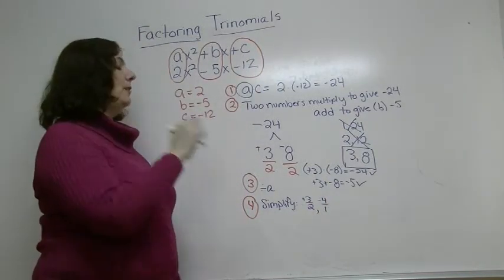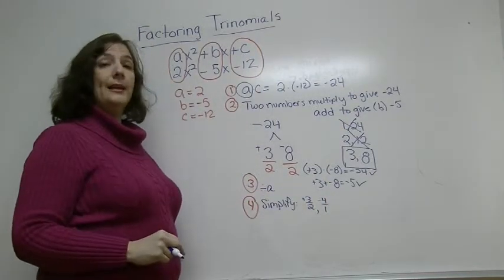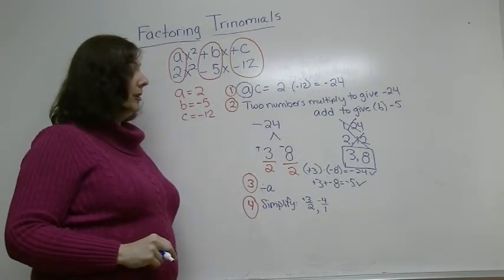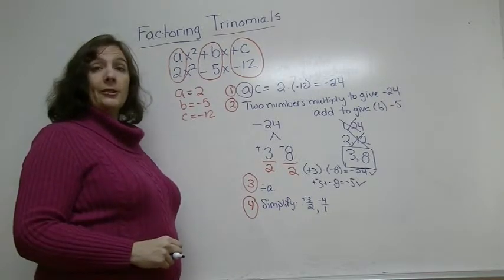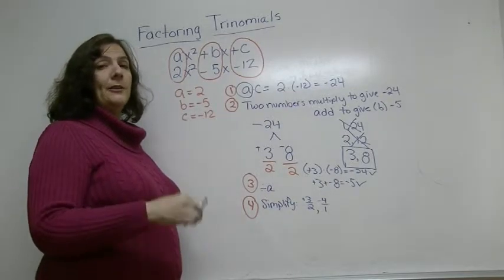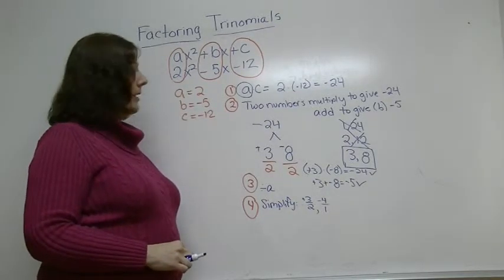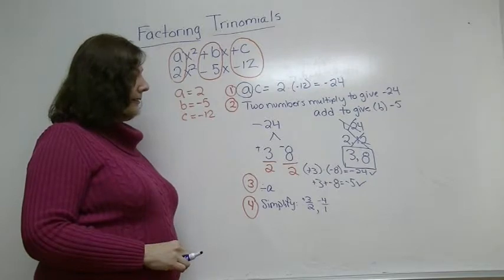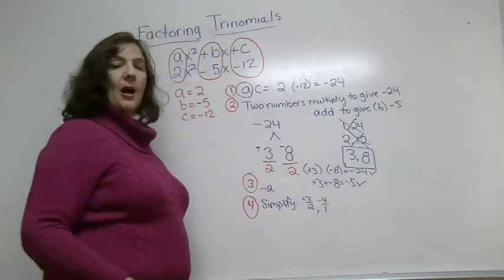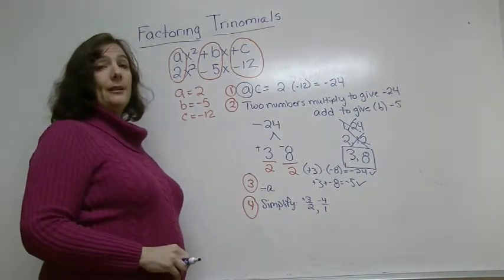Now if it reduces to a whole number like negative 8 divided by 2 equals negative 4, still write it as a fraction, negative 4 over 1, because we're going to need these in fraction form in order to do our last step. If you get an improper fraction, also leave it as an improper fraction.